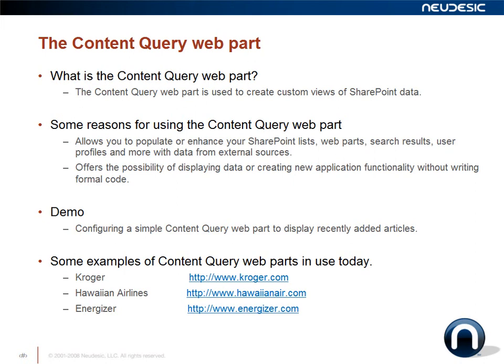Now we're going to talk about the content query web part. This is an awesome web part available in MOSS 2007, used to create custom views of SharePoint data. One of the biggest complaints before was the way data would be displayed within SharePoint — hence the content query web part. It allows you to populate or enhance your SharePoint lists, web parts, search results, user profiles, and more with data from external sources, without having to write formal code. We're going to turn it back over to Scott to demo a brief thing about the content query web part.